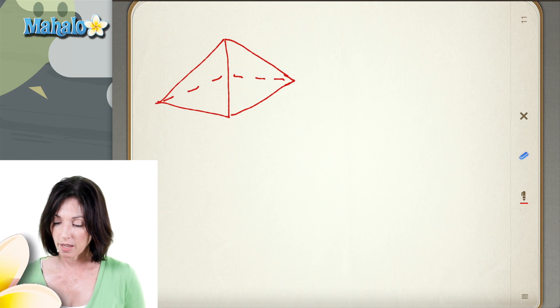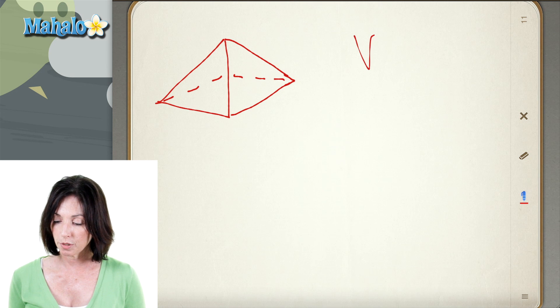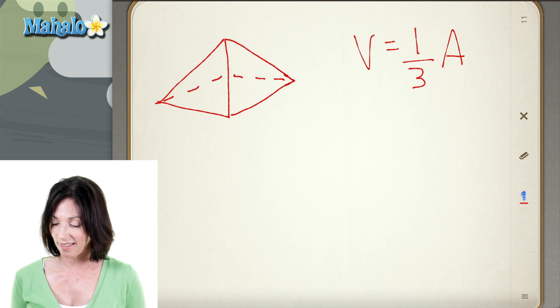This is the formula. The volume of a pyramid is equal to one-third the area of the base multiplied by the height.